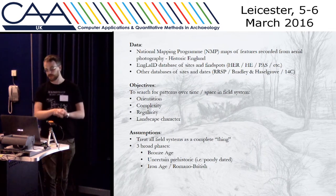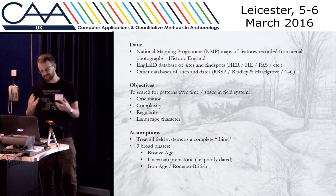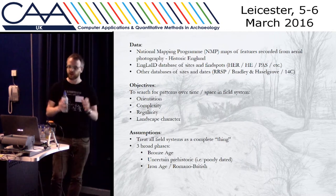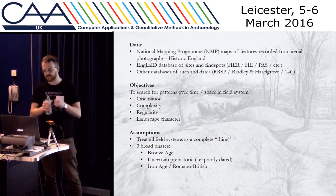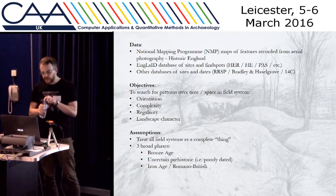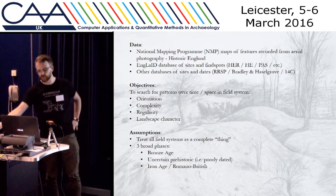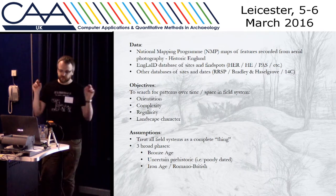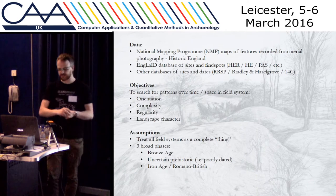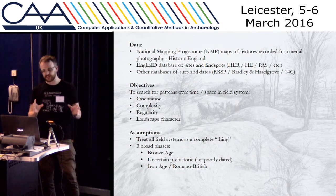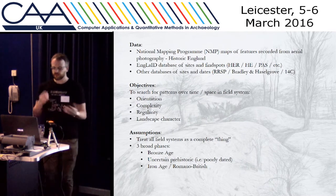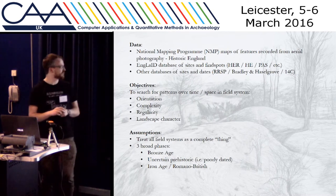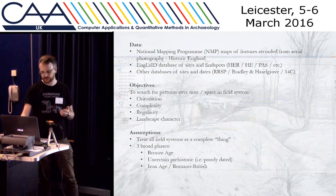Basically what I'm interested in is searching for patterns over time and space in field system orientation, complexity, regularity, and the landscape character of the areas where they're being created. One drawback I have to deal with is treating all field systems as a complete thing — I can't look at how they developed internally because that data just isn't in the NMP. I've grouped them into three broad phases: Bronze Age, uncertainly prehistoric, and Iron Age through into Romano-British.